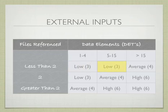Five to fifteen would be rated as a low, too. If it has more than 15 data elements, it would be rated as an average.